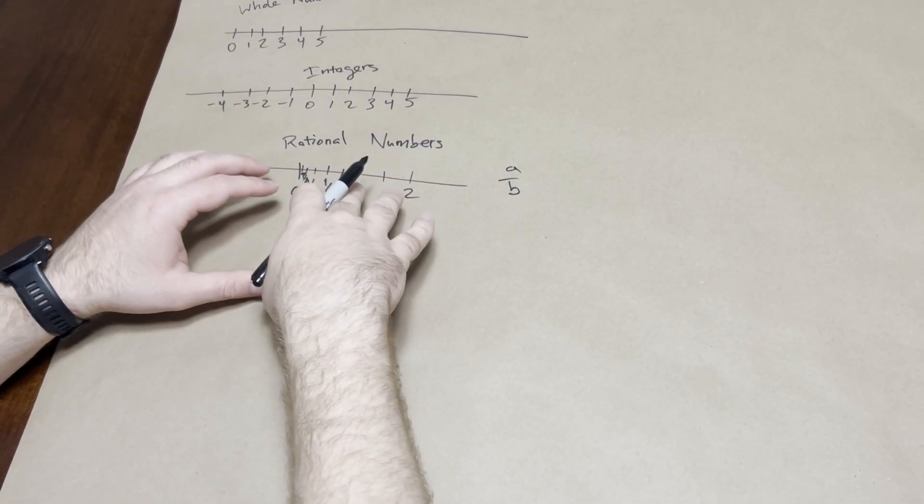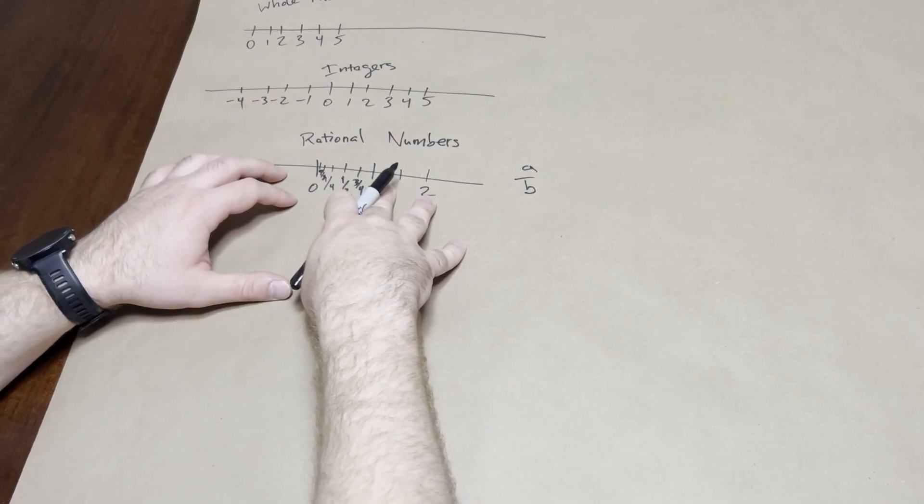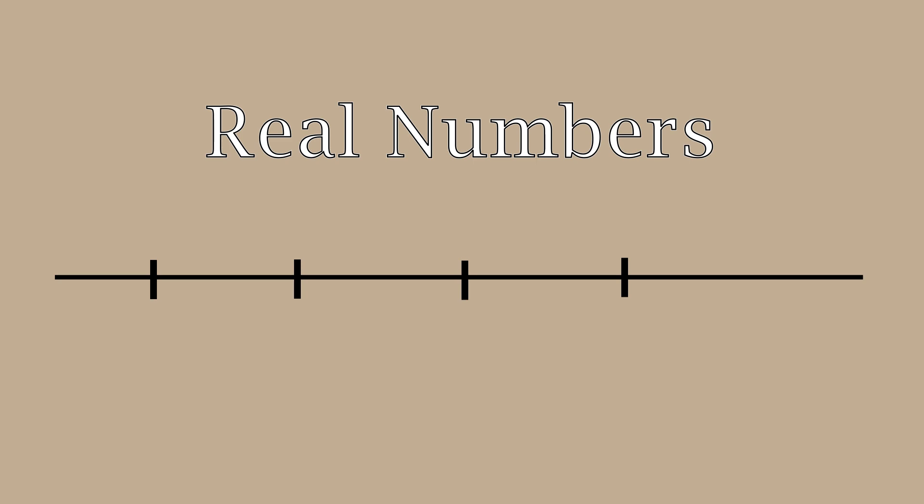But there's some numbers that are missing. There's some gaps in this number line. This is where the set of reals kind of comes into play. This is everything that you and I typically think of when we think of numbers. We have zero, one, two, three as usual. And then we have a number like pi, 3.14, a bunch of digits afterwards. We still have our half, but we also have the square root of two, the golden ratio. All of that fits somewhere in here.